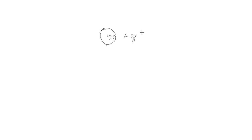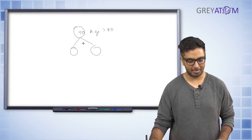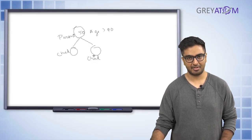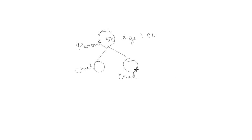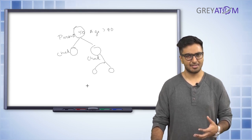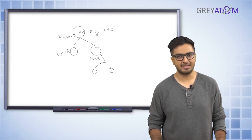For example, you split people based on age greater than 40 versus age less than 40. Because you made a decision based on age, this is a parent node and the two resulting groups are child nodes. Each child node can also become a parent node, since you'll keep splitting further. You keep splitting until you decide to stop.